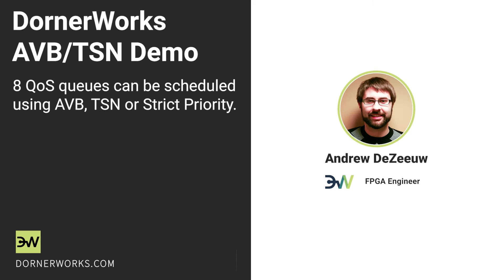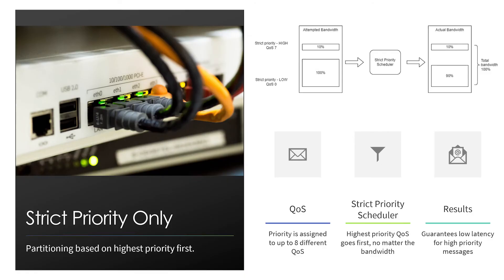With strict priority, the highest QoS gets to transmit first with no guarantees on bandwidth or time — which is where the other standards come in. In the demo, we start with strict priority scheduling to show that when multiple QoS queues are trying to transmit at once, we always give priority to the highest priority queue.